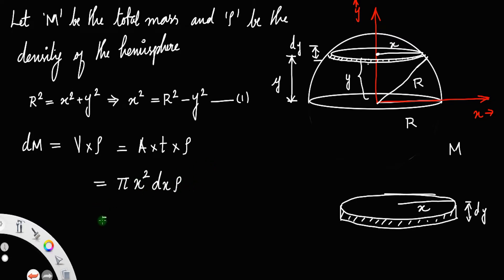Instead of x squared you can write pi into r squared minus y squared dy times rho. This is the mass. Here rho means the density of the whole hemisphere.